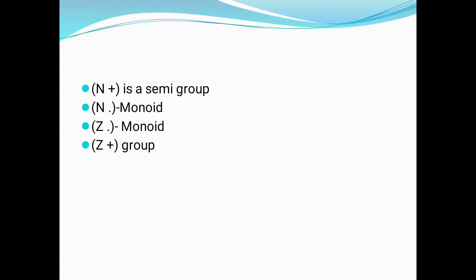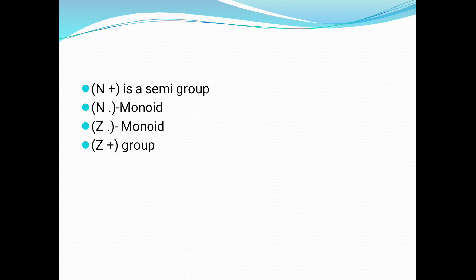By the same procedure, (N, ·) — dot meaning multiplication — is a monoid because under three conditions are satisfied: closure, associative, and identity. But inverse does not exist. So (N, ·) is a monoid. Similarly, (Z, ·) is a monoid. Why? Because (Z, ·) does not form a group — it does not contain fractional elements, meaning no inverse element. So (Z, ·) contains only closure, associative, and identity. Therefore (Z, ·) is a monoid.